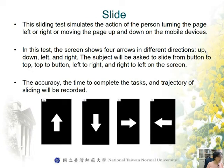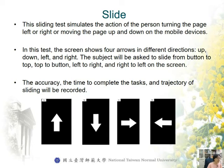The second task was sliding. The sliding test simulates the action of a person turning the page left or right, or moving the page up and down on the mobile device. In this test, the screen shows four arrows in different directions: up, down, left, and right. The subject is asked to slide from bottom to top, top to bottom, left to right, and right to left on the screen. The accuracy, the time to complete the task, and the trajectory of sliding were recorded.